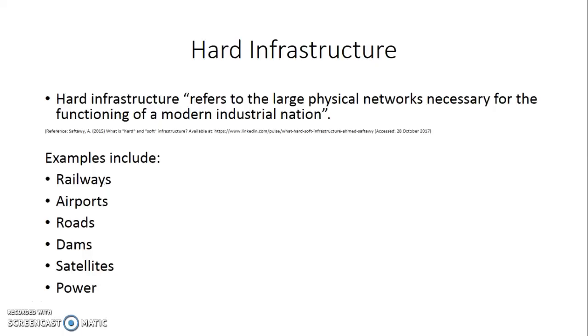Hard infrastructure refers to the large physical networks necessary for the functioning of a modern industrial nation. Examples of hard infrastructure include railways, airports, roads, dams, satellites and power lines.